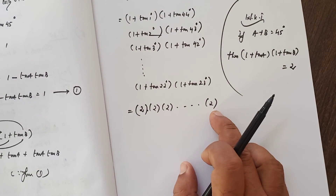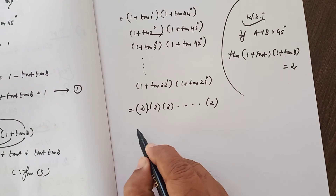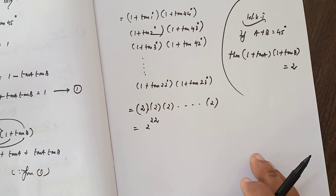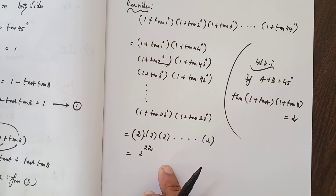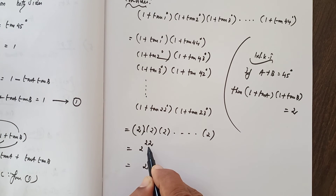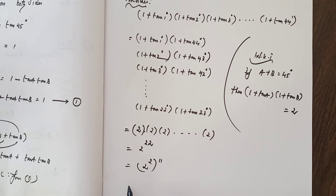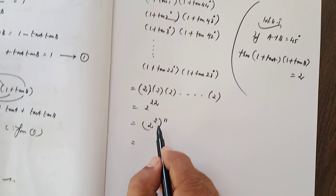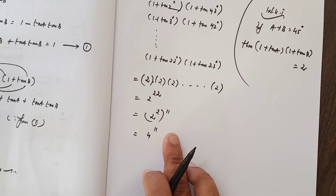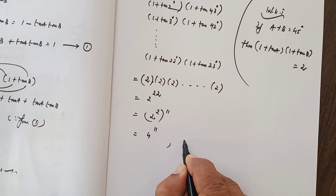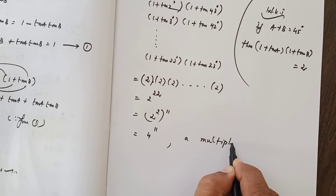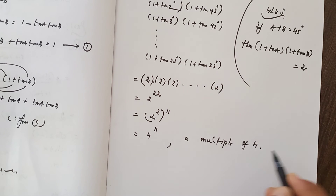So 2 is multiplied 22 times, which equals 2^22. Now 22 = 2×11, so 2^22 = 2^(2×11) = (2²)^11 = 4^11. Since 4^anything is a multiple of 4, this expression is a multiple of 4. Hence proved.